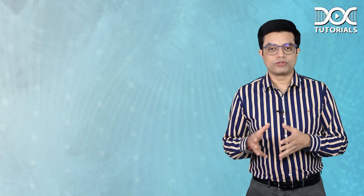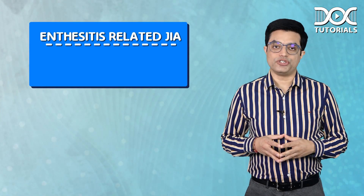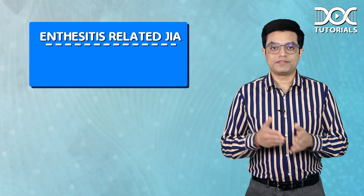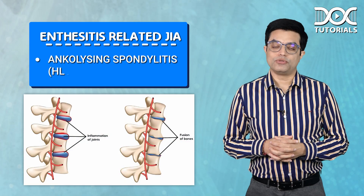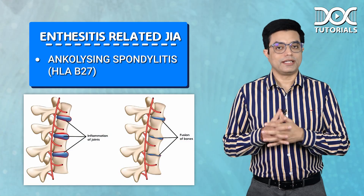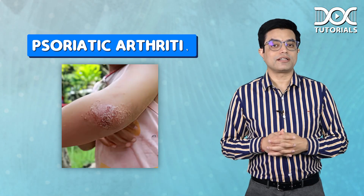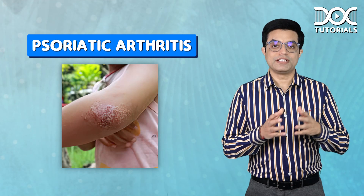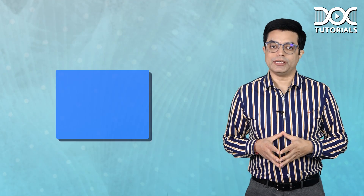The fourth variety of JIA is enthesitis-related JIA. Many of them tend to develop ankylosing spondylitis and they are HLA-B27 positive. The fifth variety is psoriatic arthritis, which is also included in the varieties of JIA.